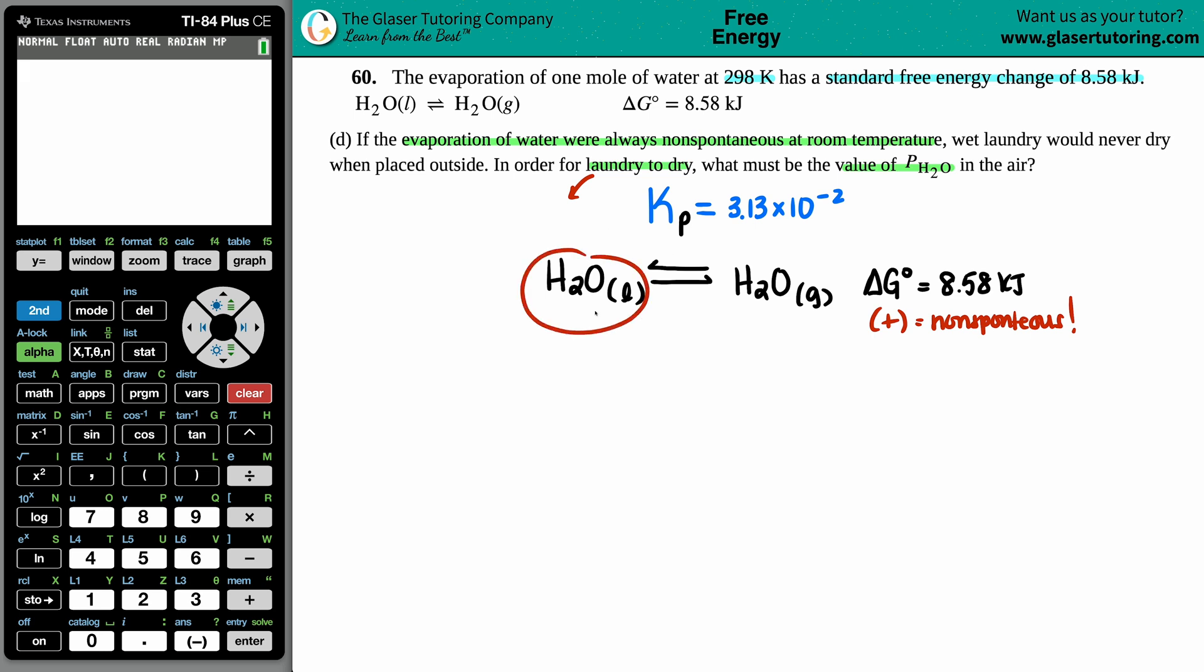Well, if the water is still in a liquid form, all your clothes are going to be wet. We need that liquid to evaporate off the clothes. So in order for the laundry to be dry, we want to favor H2O gas.